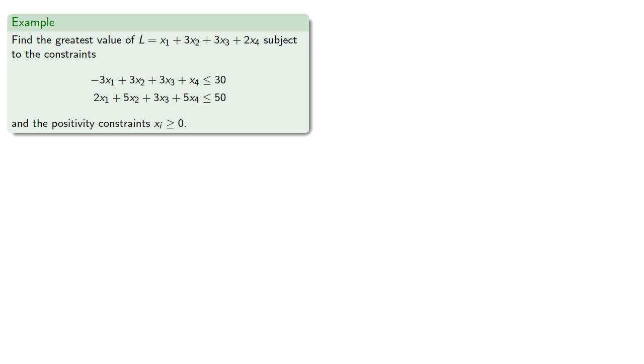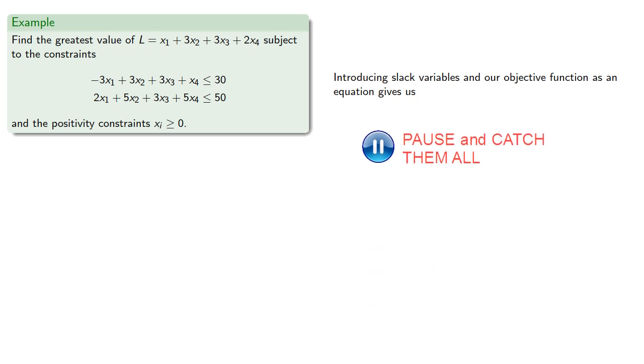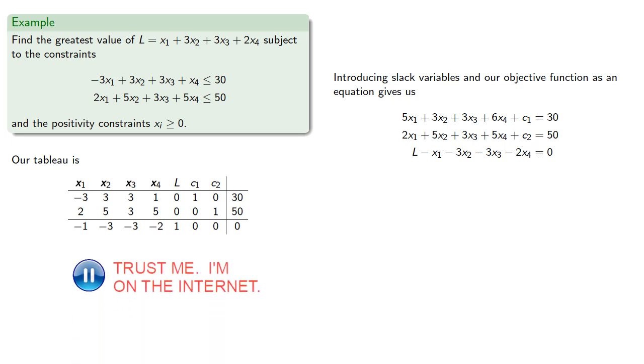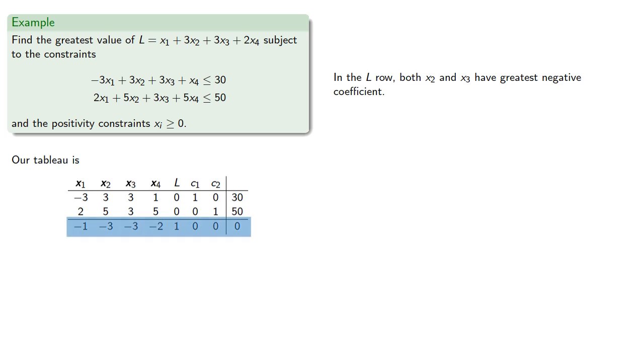One potential problem is that we have to choose the least quotient. But there are two ways we could interpret least. Let's consider an example. So let's try to solve this optimization problem. Introducing slack variables and our objective function as an equation give us our tableau. In the L row, both x2 and x3 have greatest negative coefficient. Since x2 has a lower index, we'll pivot on x2, making it our entering variable.